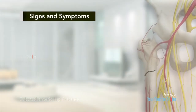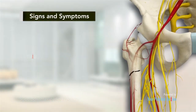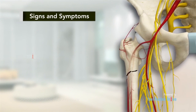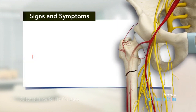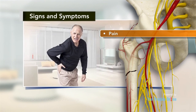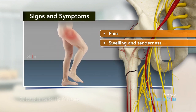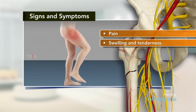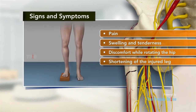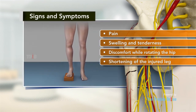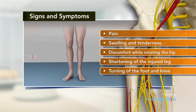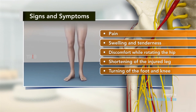Signs and symptoms of subtrochanteric hip fracture include pain in the groin or outer upper thigh, swelling and tenderness, discomfort while rotating the hip, shortening of the injured leg, and outward or inward turning of the foot and knee of the injured leg.